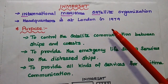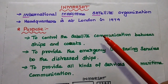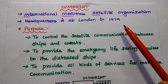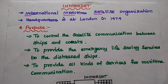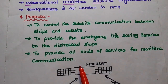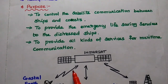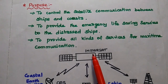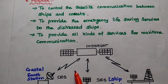Now we are going to discuss Inmarsat in satellite communication. Inmarsat stands for International Maritime Satellite Organization, which was established in the year 1979. Here, maritime refers to marine-related mobile services. Inmarsat is mainly used to control satellite communication between ships and coastal areas, and also to provide emergency life-saving services to distressed ships as well as distressed people — simply all kinds of services for maritime communication.